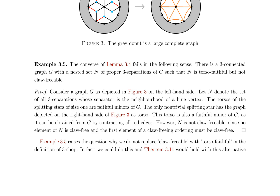The authors consider an arbitrary splitting star sigma of N, showing that if sigma is not interlaced by (A, B), it defines a splitting star of NA and NB with the same torso as sigma, which is a faithful minor of G. If sigma is interlaced, then sigma_A and sigma_B define splitting stars of NA and NB respectively, with torsos as faithful minors of GA and GB. The union of witnessing maps phi_A and phi_B shows the torso of sigma is a faithful minor of G. An example depicted in Figure 3 illustrates why the converse of Lemma 3.4 fails, raising the question of why claw-freeable was not replaced with torso-faithful in the definition of 3-chop.